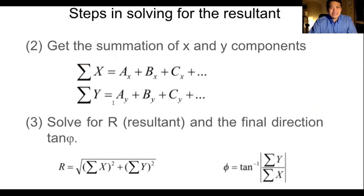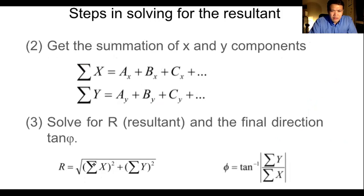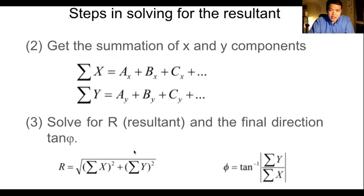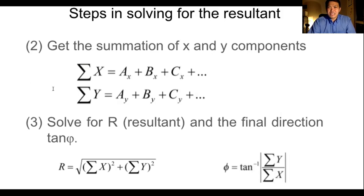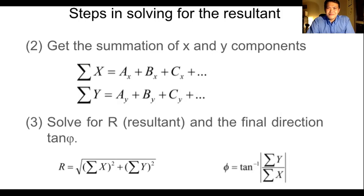Step 3: Solve for the resultant and the final direction. The resultant is R equals the square root of (ΣX)² + (ΣY)². For the direction, theta equals inverse tangent of ΣY over ΣX. Those are the three steps for solving vector problems using the component method. I'll see you in the next video for sample problems.